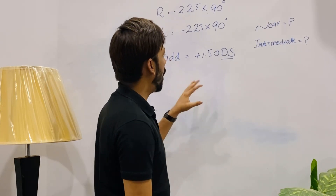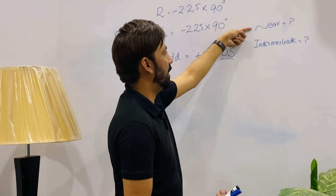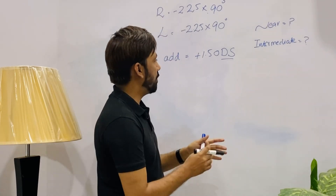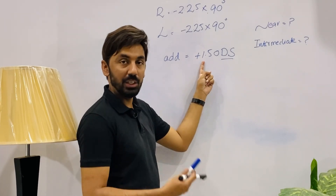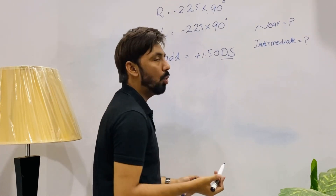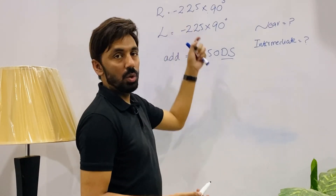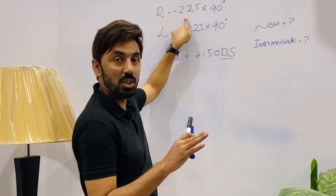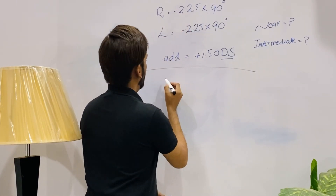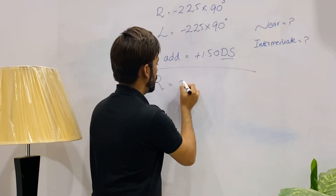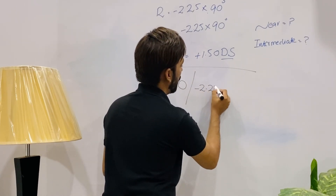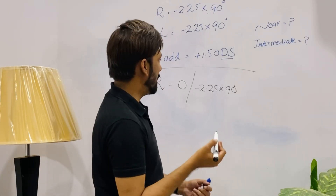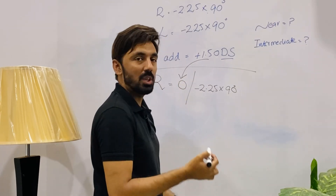Now we will learn how to find the near prescription. Since there is no spherical correction in this prescription — only cylinder — the spherical value is zero. So in the right eye, spherical is 0, cylinder is minus 2.25, and axis is 90 degrees. To find the near vision prescription, we simply add the addition into the spherical correction of the distance prescription.